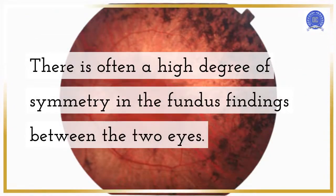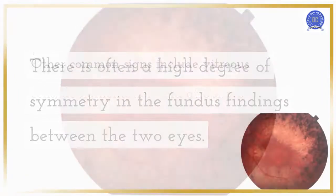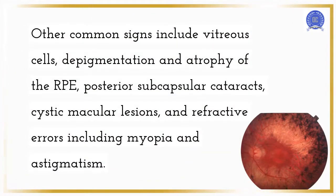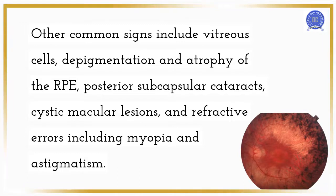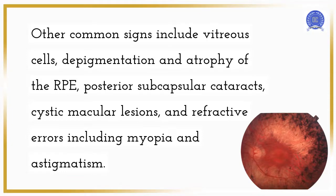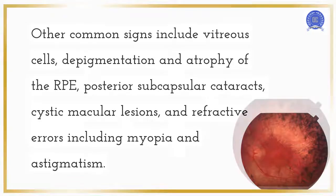There is often a high degree of symmetry in the fundus findings between the two eyes. Other common signs include vitreous cells, depigmentation and atrophy of the RPE, posterior subcapsular cataracts, cystic macular lesions, and refractive errors including myopia and astigmatism.